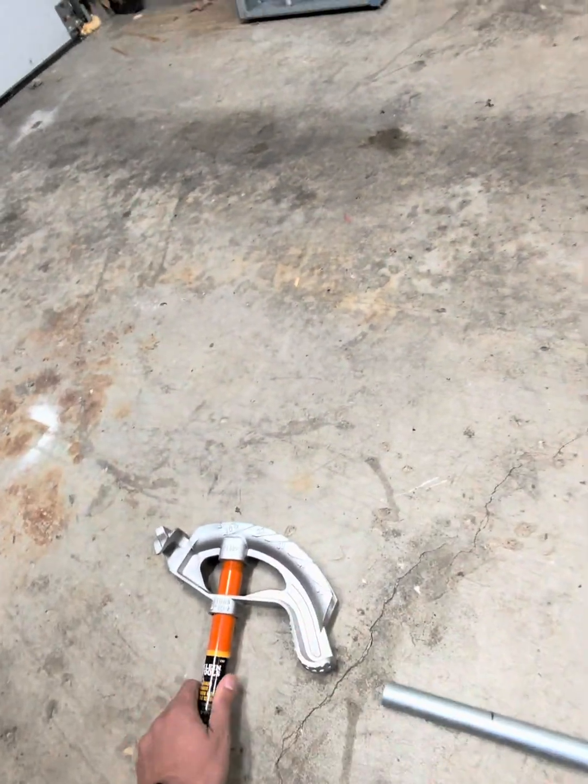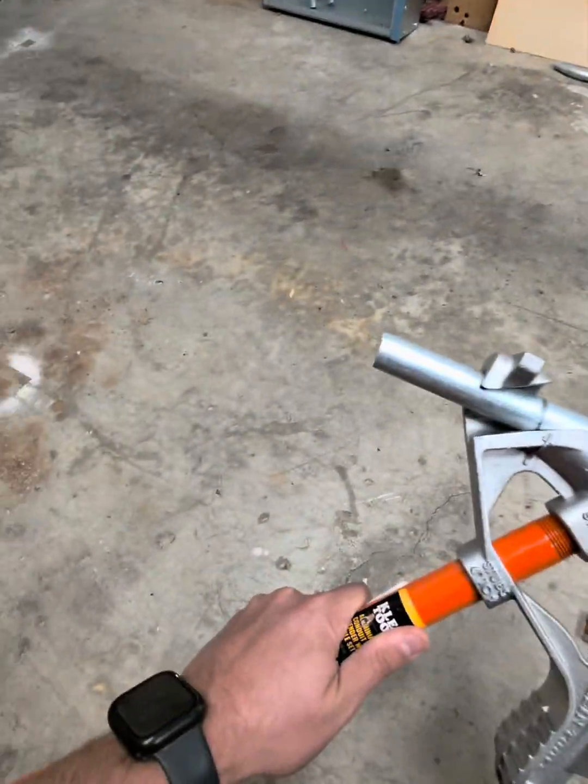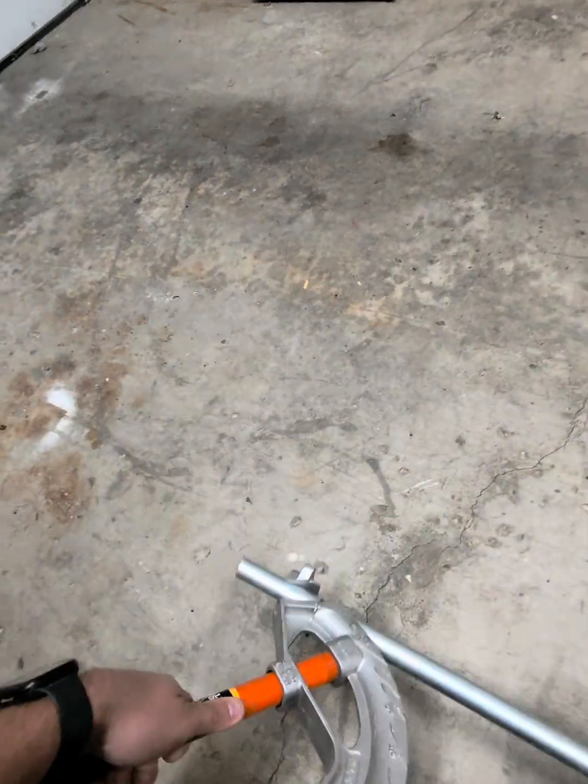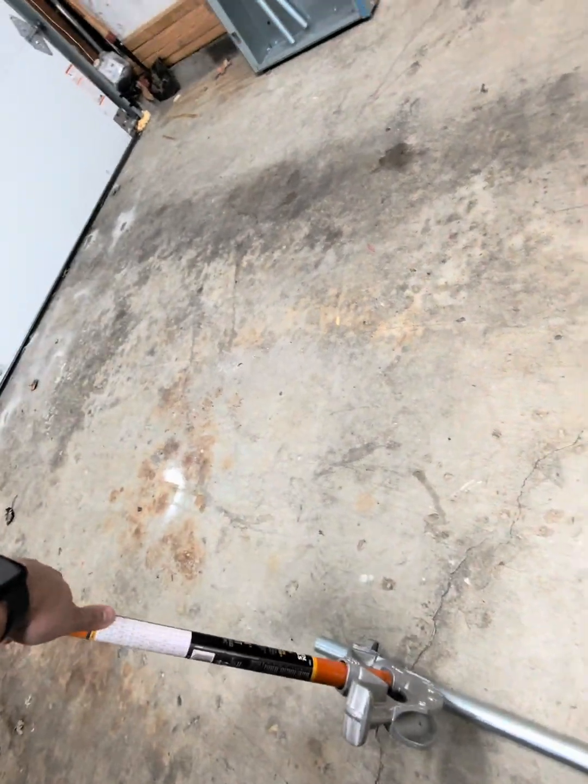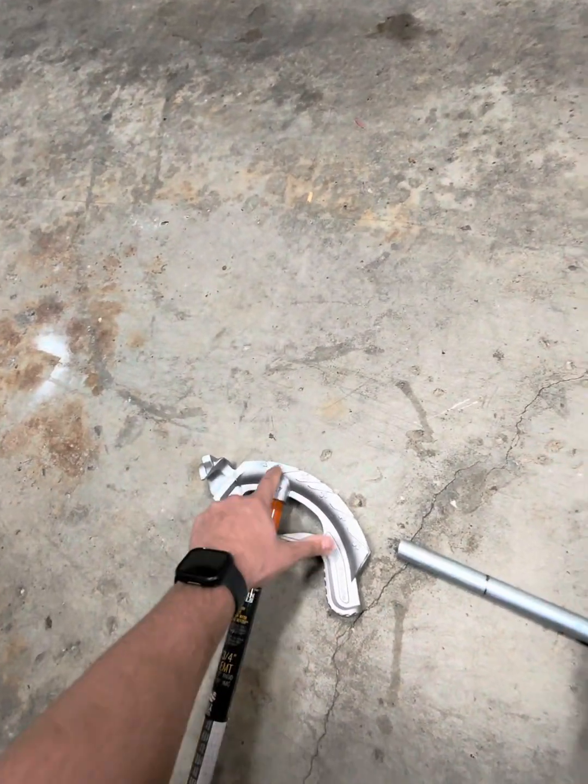What I would do at that point, I would stick it in the bender just like so. Get it lined up and then I would simply bend it like you normally see a 90 done. Now that's where things get a little different, and this is where this little star comes into play.